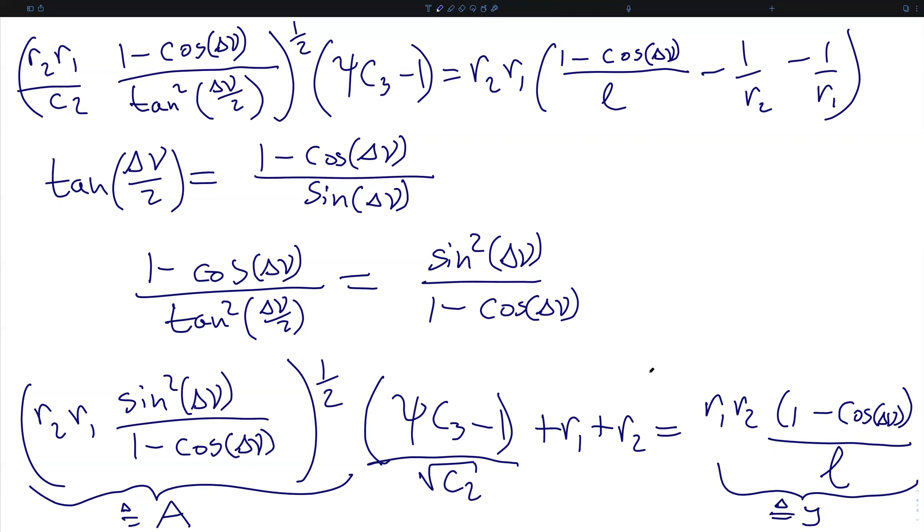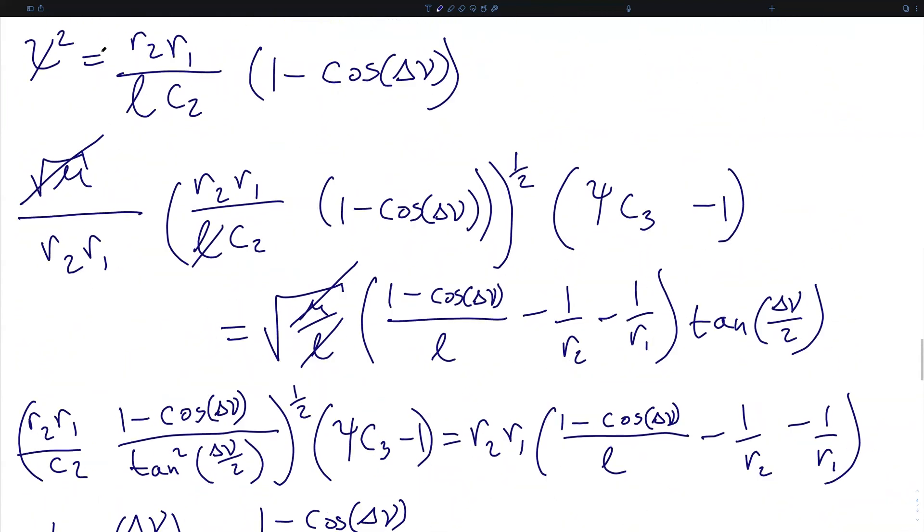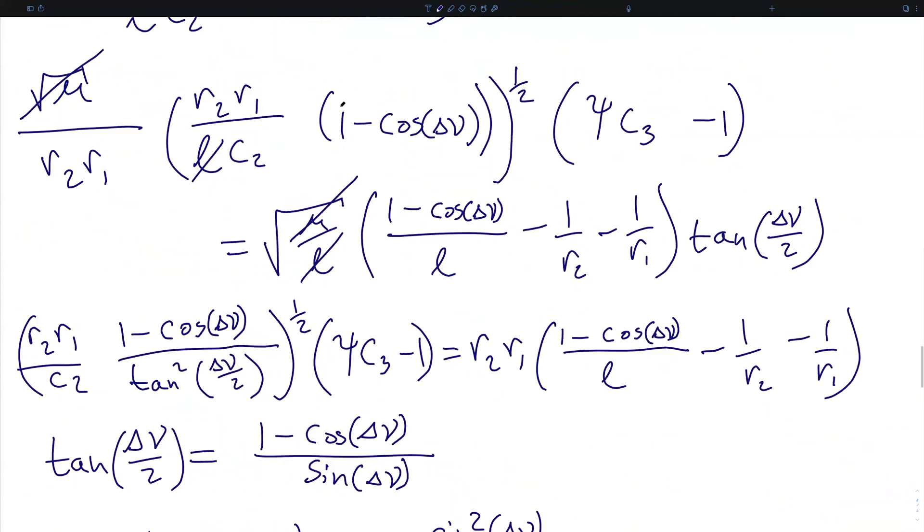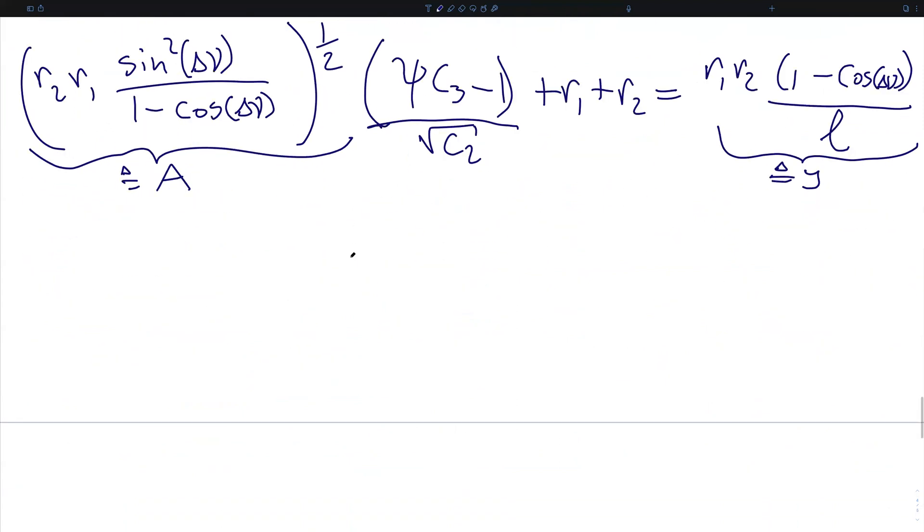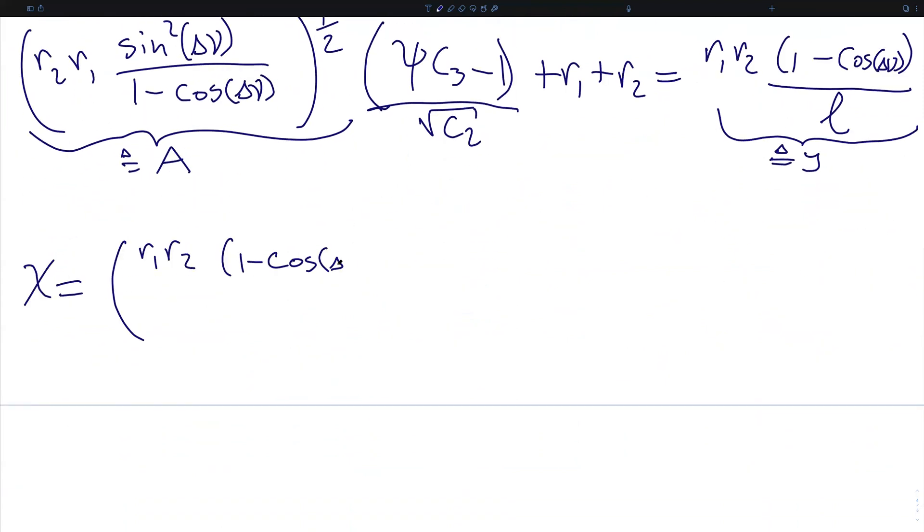We are now going to take all of this, and we're going to plug it back into our expression for chi squared, as given here. Doing this produces chi is equal to r1 r2 times 1 minus cosine delta nu over lc2, quantity square rooted, which is the same as our newly defined y divided by the c2 square rooted.